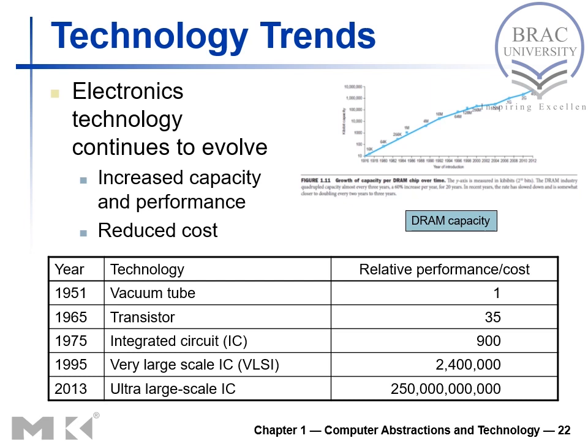Looking at technology trends — in DRAM technology, if you look at figure 1.11, you can see that DRAM capacity has increased over time. Looking at the table, the cost has really come down when we are looking at performance. In the initial stage around 1951, the cost-to-performance ratio was 1 to 1. Now, around 2013 and beyond, the costing for performance has really come down significantly.